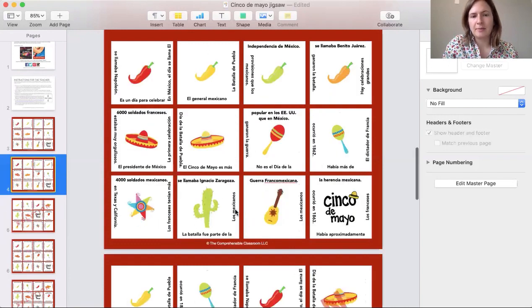Here I have a scrambled version of the puzzle. This is how I print it. This is available online and I just have it scrambled so that it's easier when I cut it out. Students can't just match up the cutting lines.